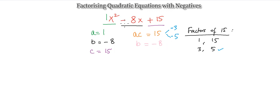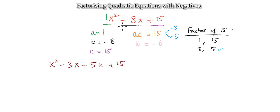So we know that minus 8x breaks down into minus 3x and minus 5x. We rewrite the main equation as x squared minus 3x minus 5x plus 15. We can then make two pairs: x squared minus 3x is one group, and minus 5x plus 15 is another.